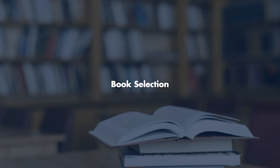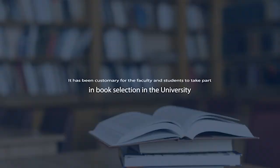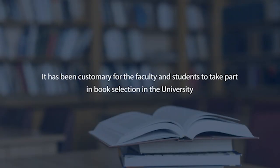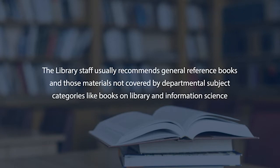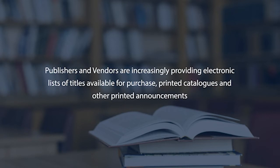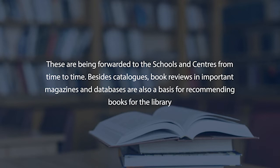Book selection, irrespective of the library type, is a very important component — whether in a university, academic, or school library. It has been customary for faculty and students to take part in book selection. Library staff usually recommend general reference books and materials not covered by departmental subject categories. Publishers and vendors increasingly provide electronic lists of titles available for purchase, and printed catalogues and announcements are forwarded to schools and centers. Book reviews in important magazines and databases are also a basis for recommending books.